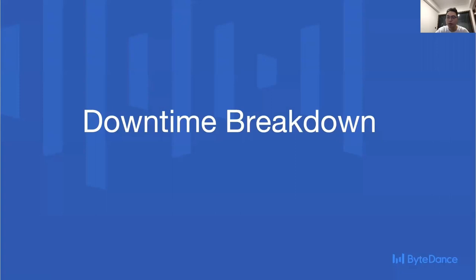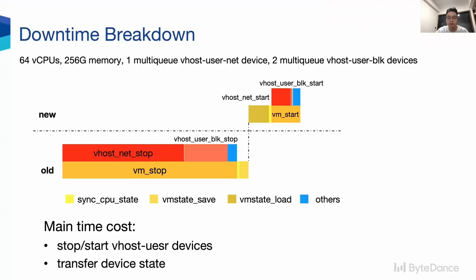In order to do the optimization, we should analyze the downtime of Live Upgrade first. This picture shows the breakdown of the downtime of a VM which has 64 vCPUs, 256 GB memory, one vhost user net device, and two vhost user block devices. The downtime mainly consists of VM stop and VM state save in the old QEMU, and VM state load and VM start in the new QEMU. The main time costs are vhost user device stop and start, respectively, in VM stop and VM start. Device state transfer also takes some time.